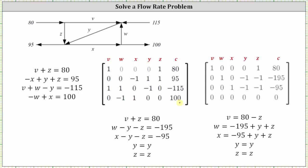The next step is to write the augmented matrix in reduced row echelon form, which I've already done. Writing the equations for each row: the first row gives v plus z equals 80; the second row gives w minus y minus z equals negative 195; the third row gives x minus y minus z equals negative 95; and the fourth row is a row of zeros. The pivots are in row one column one, row two column two, and row three column three — so v, w, and x are the basic variables. The remaining variables y and z are the free variables, so we also include y equals y and z equals z.